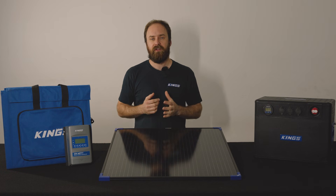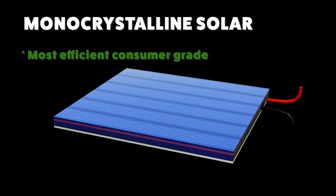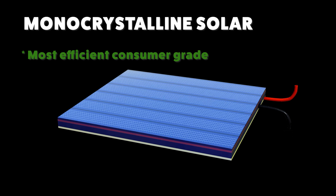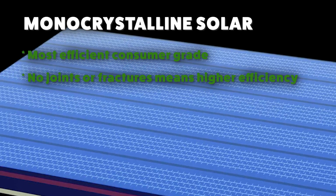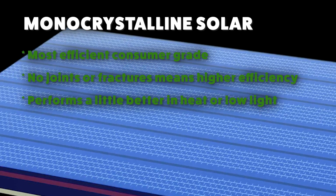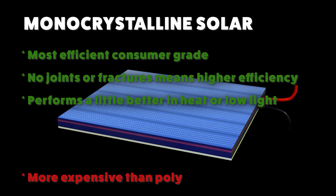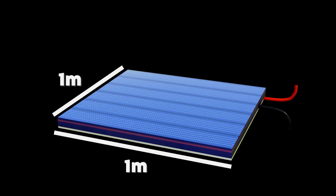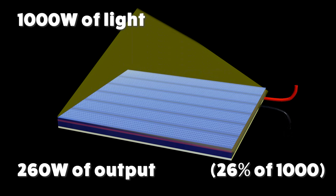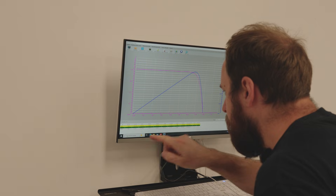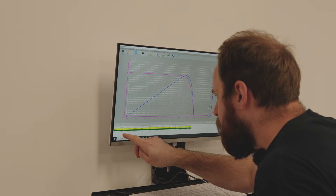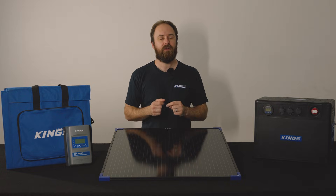Monocrystalline solar panels are the most efficient for their size in this consumer grade range, before you get into things like PERC cells or bifacial cells. Instead of using molten silicon, they're made from a single thin sliver of silicon, which means there's no joints, cracks, or fractures. That leads to higher efficiency and it also performs a little bit better than poly in warm or low light conditions. Overall they can be about 26 percent efficient, so a one meter square panel with 1,000 watts of light hitting it would output around 260 watts. Note that all Adventure Kings solar panels are monocrystalline.